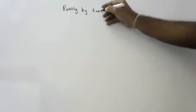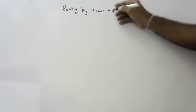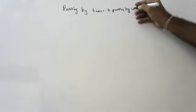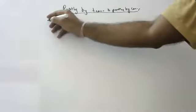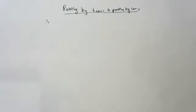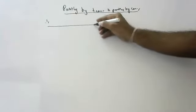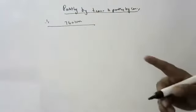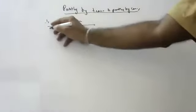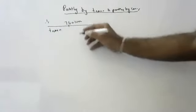Today we will discuss problems where a person travels partly by train and partly by car. This is a screen time topic in linear equations. We have a first question: Ramesh travels 760 kilometers, partly by train and partly by car.